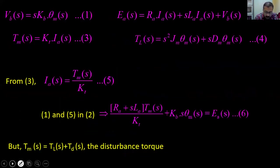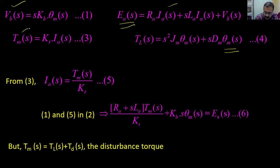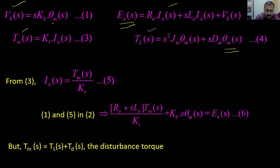Now we will combine all these equations. Our aim is to find the transfer function between θm(s) and Ea(s), eliminating intermediate variables Vb(s), Ia(s), and Tm(s). From equation three: Ia(s) = Tm(s)/Kt. And Vb(s) = s·Kb·θm(s). Substituting into equation two: (Ra + s·La)·(Tm(s)/Kt) + s·Kb·θm(s) = Ea(s). That is equation six.